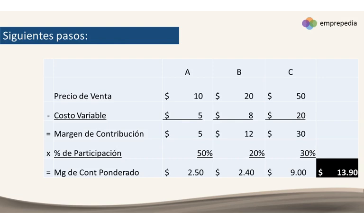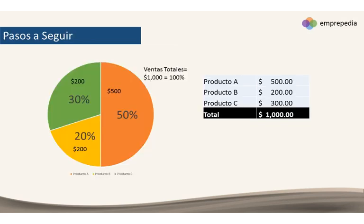Después de los pasos que estuvimos observando, debemos hacer una pequeña tabla. El primer paso que debemos dar es determinar los porcentajes de participación que tienen los productos en nuestras ventas totales. Vamos a imaginar que ese mes nosotros vendimos mil pesos — esos mil pesos van a representar nuestro 100% de ventas — y lo que tenemos que hacer es determinar el porcentaje de cada uno de esos productos.